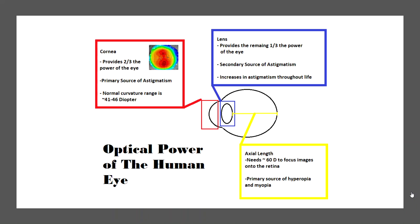The cornea provides approximately two-thirds of the power of the eye and is the primary source of astigmatism, especially when patients are younger. A normal curvature range for the cornea is about 41 to 46 diopters. The lens provides about a third of the power of the eye and is a secondary source of astigmatism initially, but it increases in astigmatism throughout life.